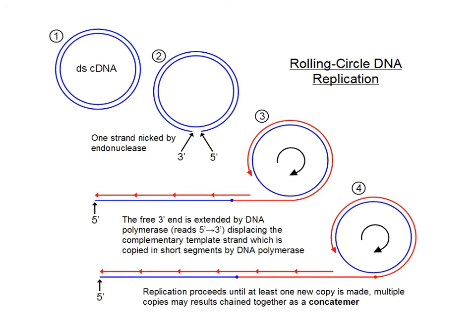Rolling circle replication is initiated by a single-stranded nick at a particular location in the genome, leading to the formation of a free 3-prime end and a free 5-prime end. Replication starts at the 3-prime end, replacing one strand of the circle and leading to the formation of a linear molecule that extends out from the circle. The lagging strand is replicated by host DNA polymerase, forming long molecules which are multiple genomes in length — the form of DNA used for packaging into new virions.